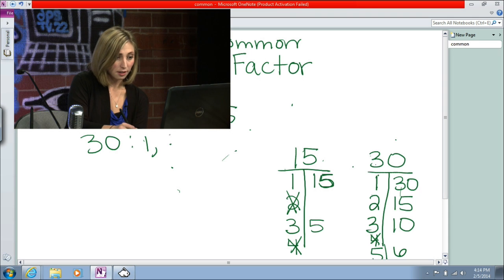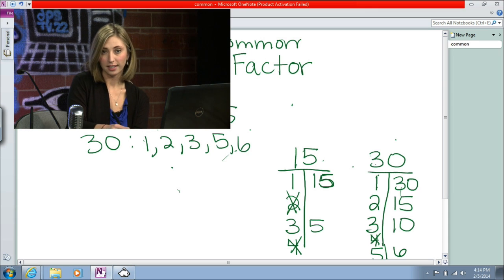So we're going to make a list of our factors of 30. So 1, 2, 3, 5, 6, 10, 15, and 30.